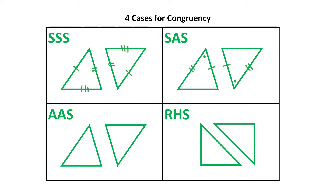Next, if you've got two pairs of angles and a side, as long as those angles are in similar positions relative to where the side is, that's fine. And lastly, the last case for congruency is having a right angle, a hypotenuse — which is the side opposite the right angle — and then a side. So those are the four cases for congruency.